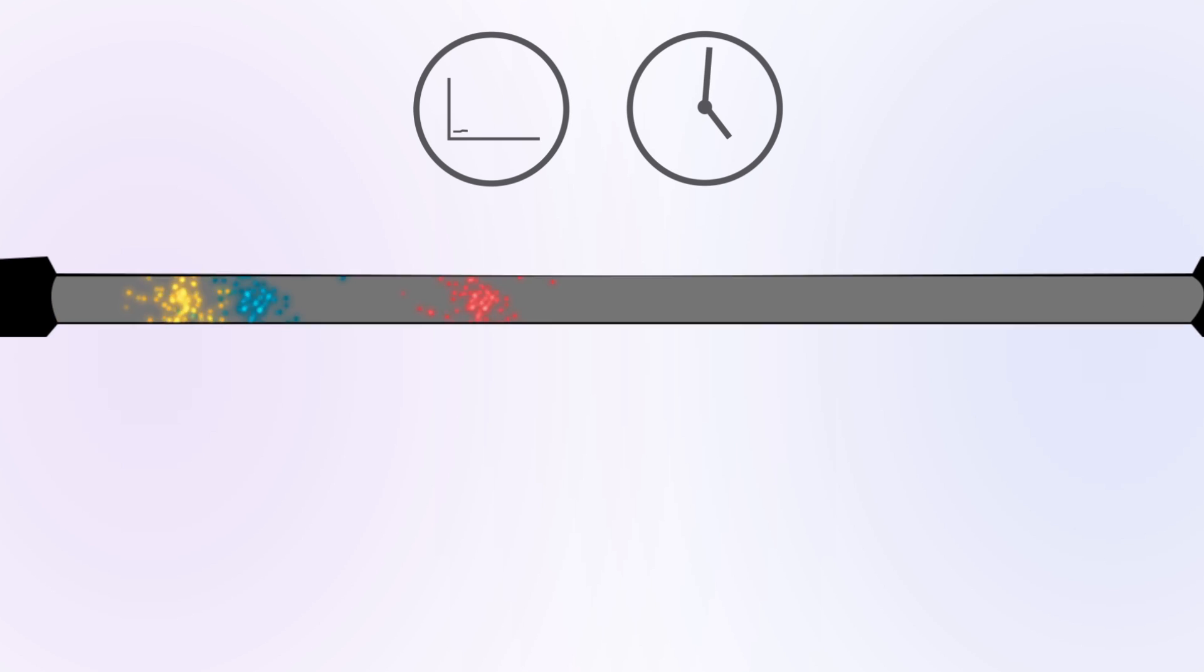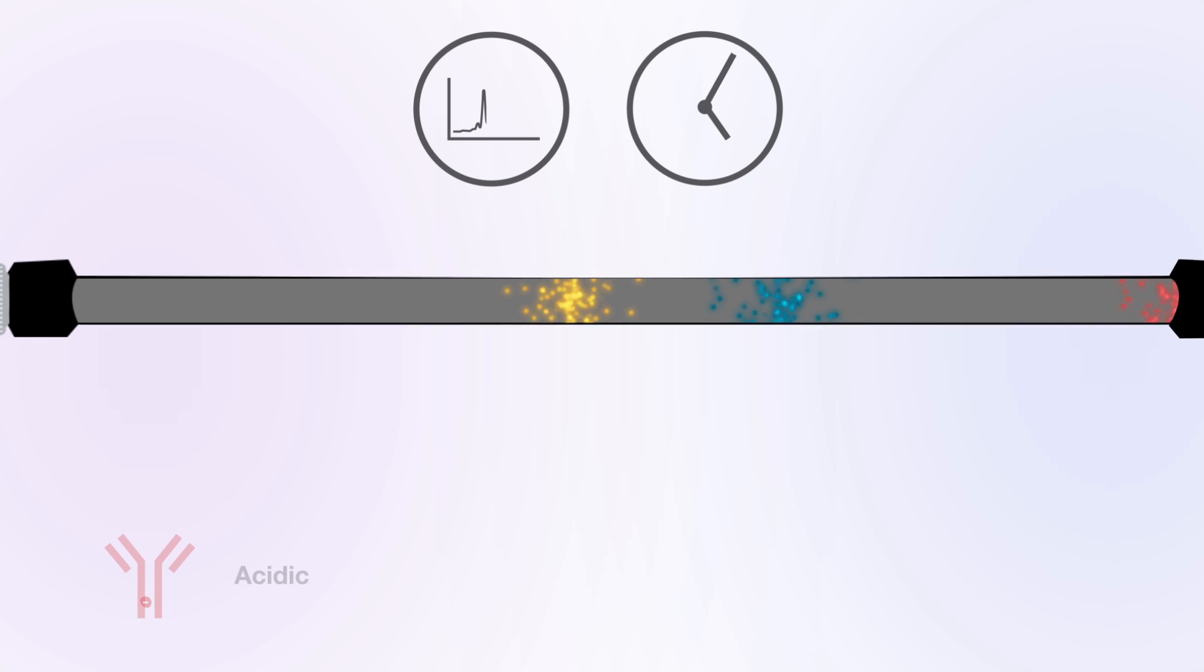As proteins move through the column, they are separated based on their relative ionic strength.